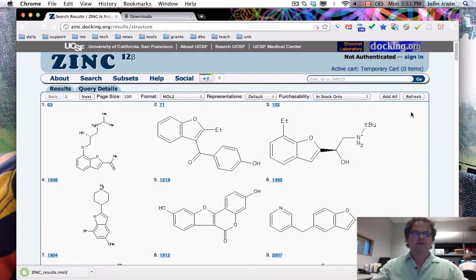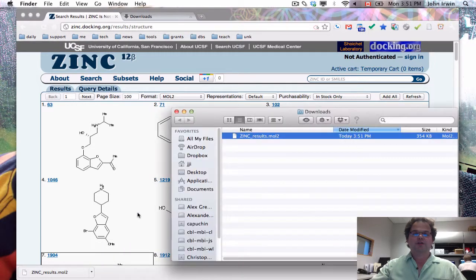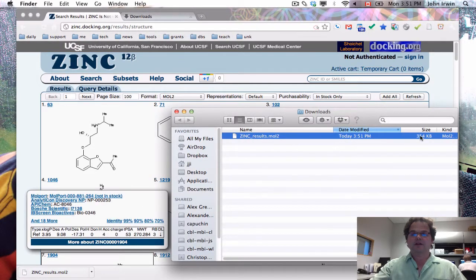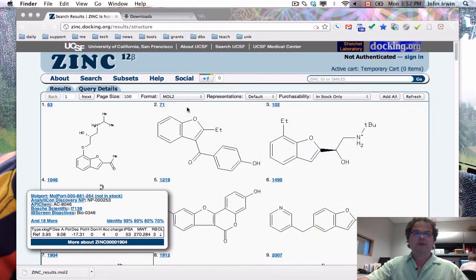We wait a couple of seconds, and there are the molecules down in the lower right-hand corner. And if we show that in the finder, there's your file, 354 kilobytes. If you're in Kuala Lumpur, that's going to take a little longer than if you're in San Francisco, but you should have gotten them pretty quickly.